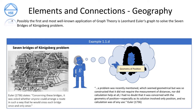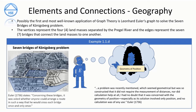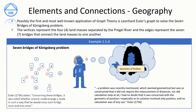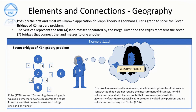Euler states: 'A problem was recently mentioned which seemed geometrical but was so constructed that it did not require measurement of distances, nor did calculation help at all. I had no doubt that it was concerned with the geometry of position.' The Königsberg bridge problem asks if a journey across each of the seven bridges connecting four land masses across the Pregel River can be undertaken crossing each bridge once and only once. The geographical disposition is formed into a mental model containing four points and seven line segments. Land masses are highlighted blue with bridges represented by red points, labeled A through D for land masses and lowercase a through g for bridges.